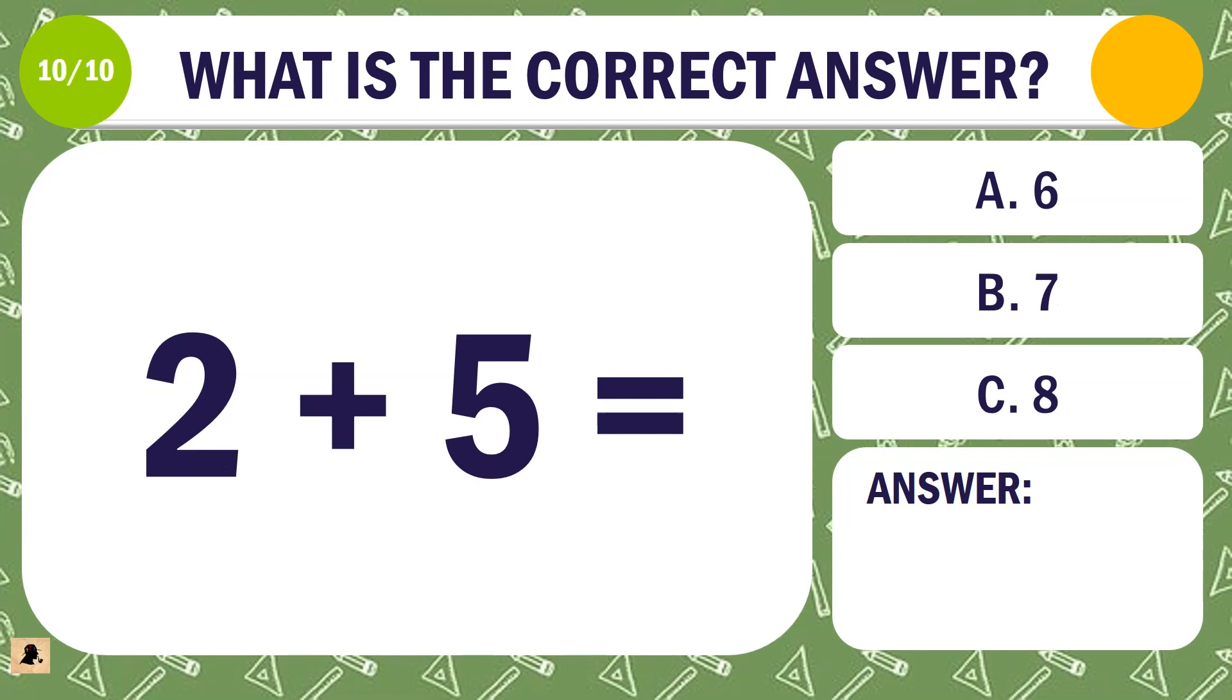Question 10. What is the correct answer for 2 plus 5? A. 6. B. 7. Or C. 8.